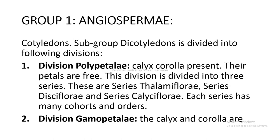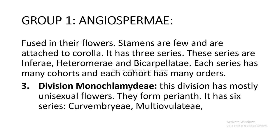Subgroup Dicotyledons is divided into the following divisions. The first division is Polypetalae: calyx and corolla present, petals free. This division is divided into three series: Thalamiflorae, Disiflorae, and Calyciflorae, each with many cohorts and orders. The second division is Gamopetalae: calyx and corolla fused in their flowers, stamens are few and attached to corolla; it has three series: Inferae, Heteromerae, and Bicarpellatae. The third division is Monochlamydeae: mostly unisexual flowers; it has six series: Curvembryae, Multiovulatae, Microembryae, Daphnales, Achlamydosporiae, and Unisexuales.